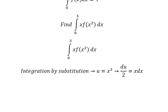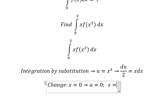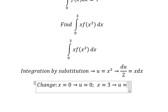Next, we need to change the boundary. If x equals 0, then u should be 0. If x equals 3, then u should be 9.